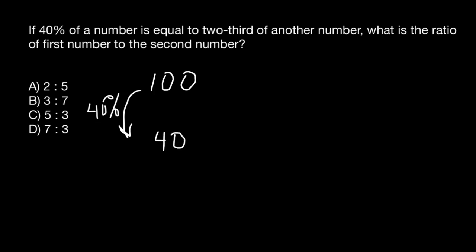So what does 40 mean for us? If 40% of the first number is equal to two-thirds of the second number, then 40 represents two-thirds of the second number. We also can say that 40 is going to be 20 plus 20, right?